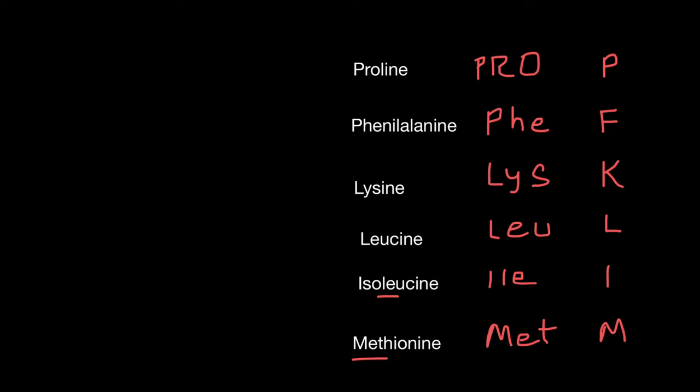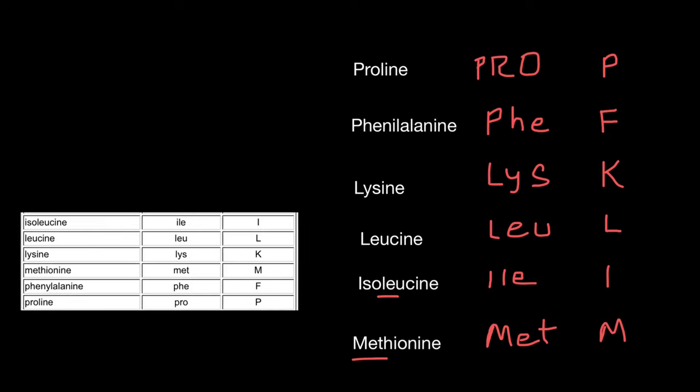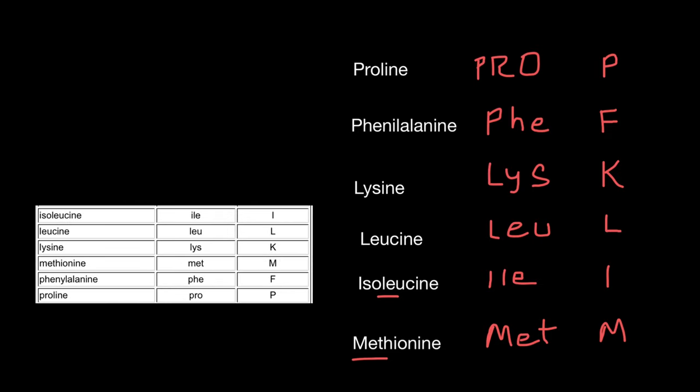Methionine is also the only amino acid that starts with M. So the three letter abbreviation is the first three letters of the name, and the one letter abbreviation is just M. We can now check if we completed this table correctly, and as you see, everything is correct. You also see how easy it was to memorize these six amino acids. Now you know 16 amino acids out of 20. Under this video in the comment area, I'm going to provide links to my other videos on this topic, so you can also learn names and abbreviations of the other amino acids.